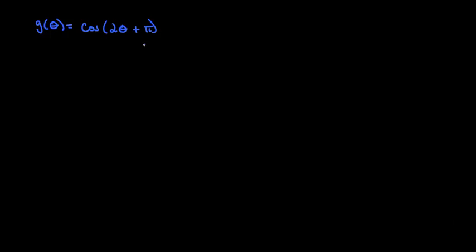To graph G, again we're going to look at amplitude, period, and phase shift. So the amplitude, well it's the coefficient out in front which is just 1. So our cosine is not going to change in its height values.